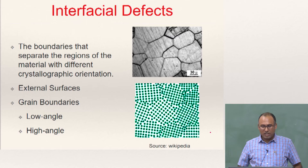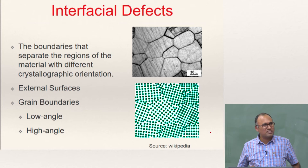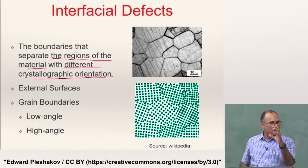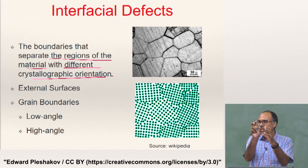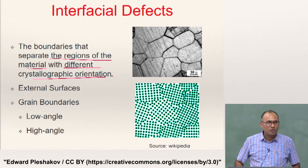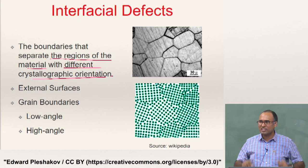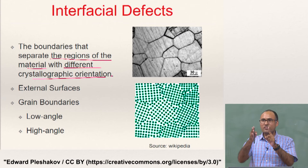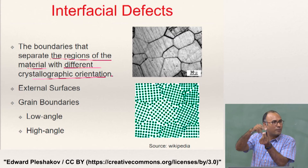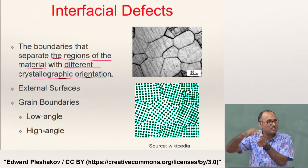There are different kinds of interfacial defects. They are basically the boundaries that separate the regions of materials with different crystallographic orientation. You have a material where in one place you have a particular crystallographic orientation and in another place you have another orientation. The boundary that separates these two orientations is what you call an interface. Every material, even a single crystal material, will have a boundary — and that would be the external surface. Atoms on the external surface are not surrounded by the same number of neighbors compared to the bulk, and as a result, the energy of the system increases — that is what your surface energy is.